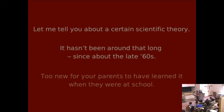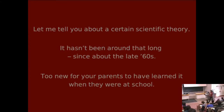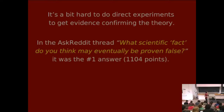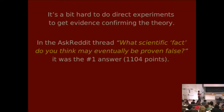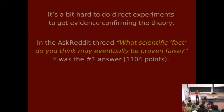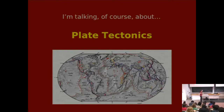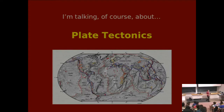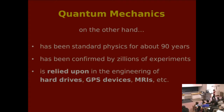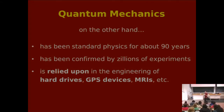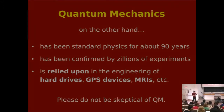Let me tell you about a certain scientific theory. It hasn't been around that long — it's since about the late 60s, so it's too new for your parents to have learned about it in school. It's a bit hard to do direct experiments to get evidence for this theory. I was on Reddit the other day, and someone asked what scientific fact do you think will be eventually proven false, and the number one answer was by a scientist in the actual field who wrote that a lot of the theories seem a little tenuous. So of course, as you might guess by now, I'm talking about plate tectonics — the theory that the continents drift around and make mountains when they crash together. That's kind of a sketchy theory. Quantum mechanics, on the other hand, has been a standard part of physics for about 90 years. It's confirmed by a zillion experiments. All your hard drives and GPSs are built in such a way to correct for quantum mechanics. So don't even be skeptical about quantum mechanics — it's legit.